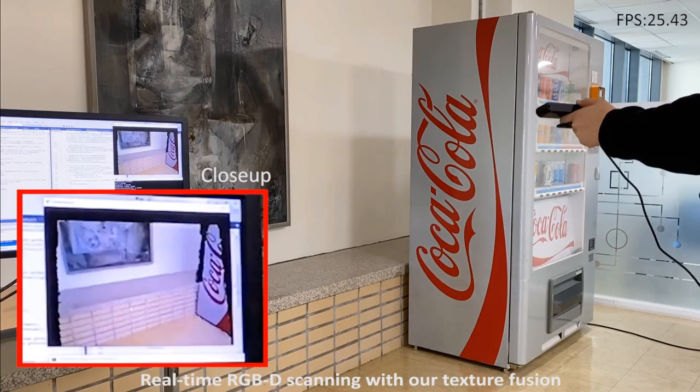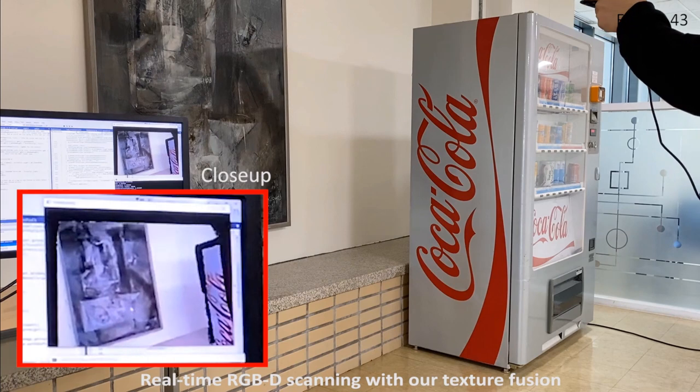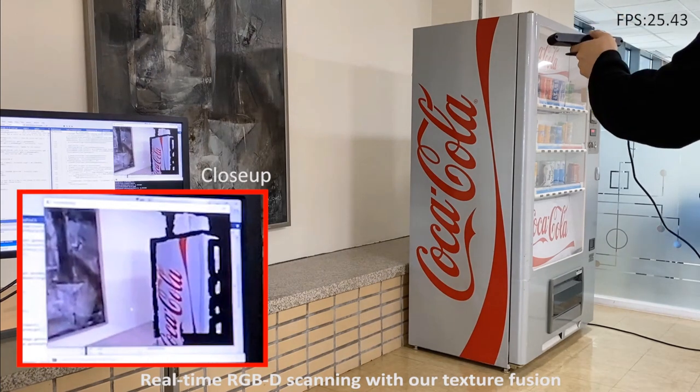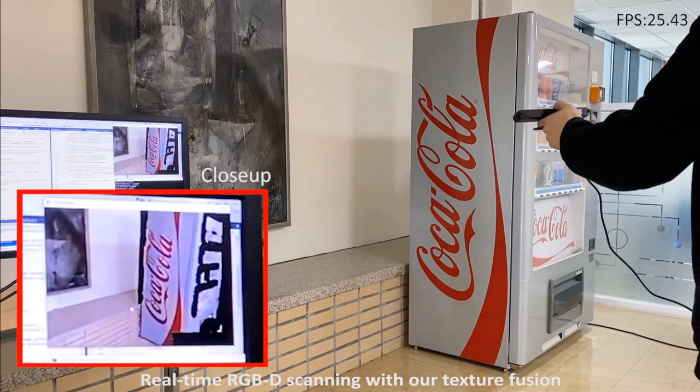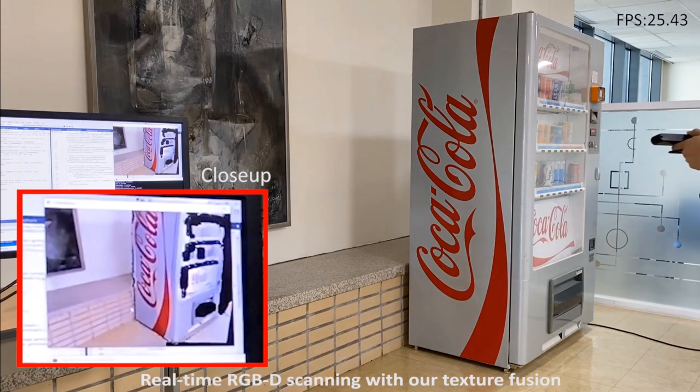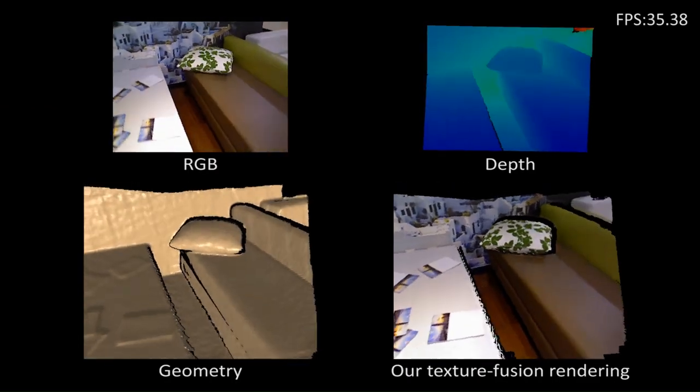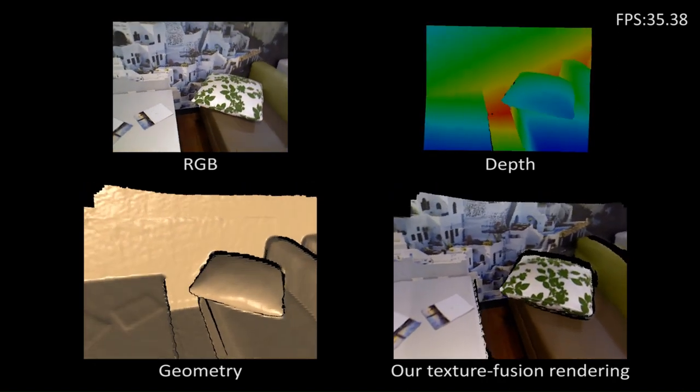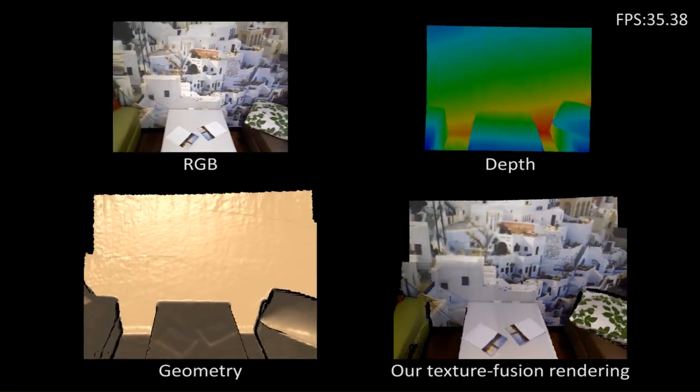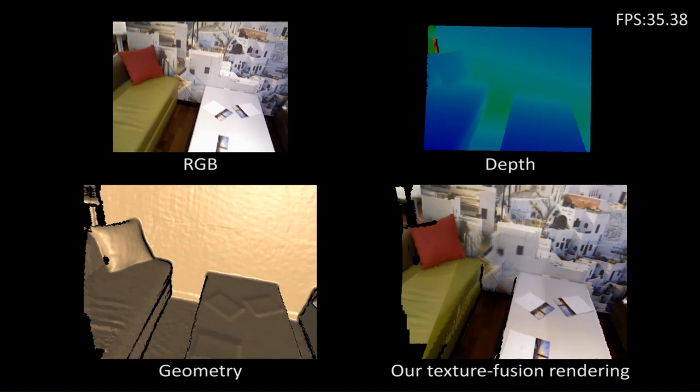Here, we demonstrate the application of our method. We use a conventional RGBD camera and capture 3D scenes with high quality texture in real time. Here is our demo. From two input streams, depth and color, we reconstruct geometry and texture simultaneously.